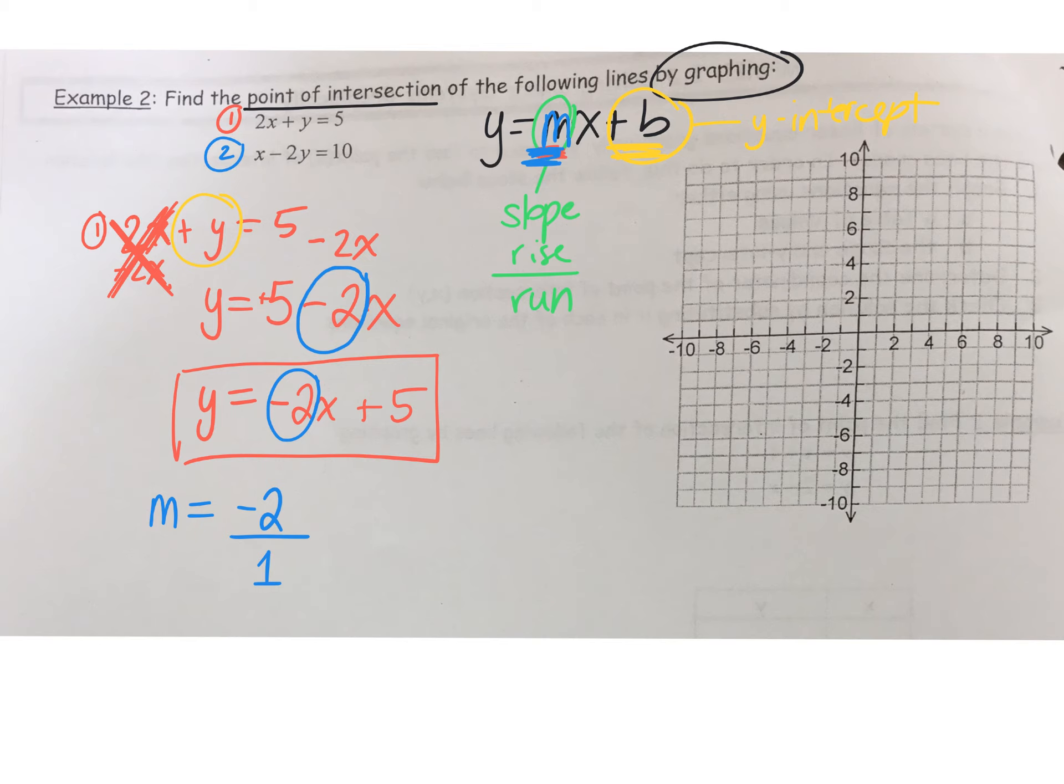Anytime you have a whole number, to make it a fraction, we can always divide by 1. It doesn't change it. Anything over 1 still keeps the number the same. And the reason I wrote it as a fraction is so that when I graph it, I can actually count the rise and the run.